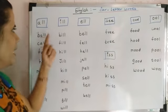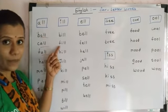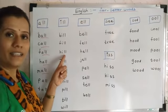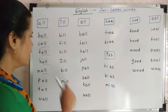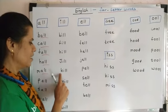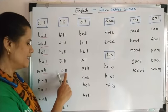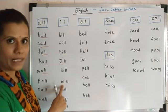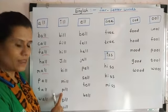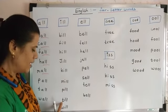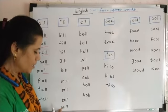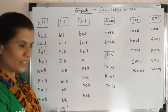B I double L — bill. F I double L — fill. H I double L — hill. J I double L — jill. K I double L — kill. M I double L — mill. P I double L — pill. T I double L — till. W I double L — will.